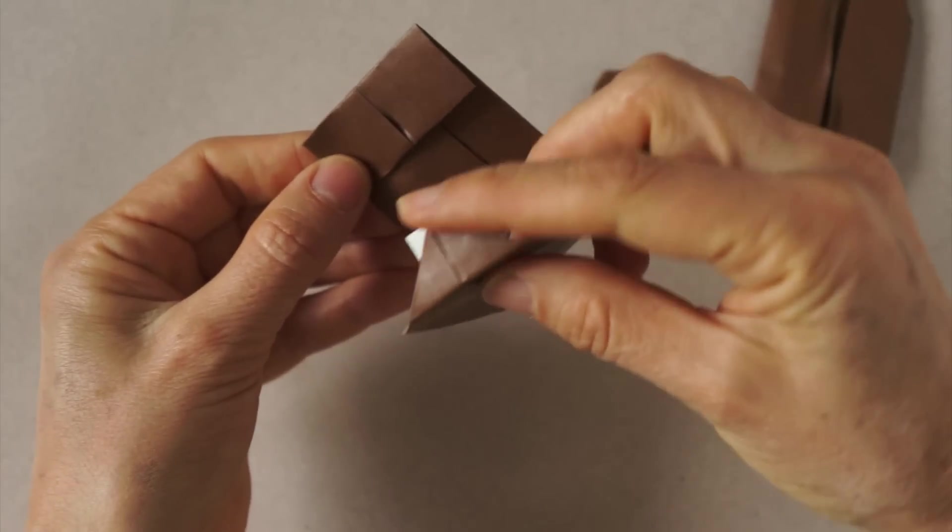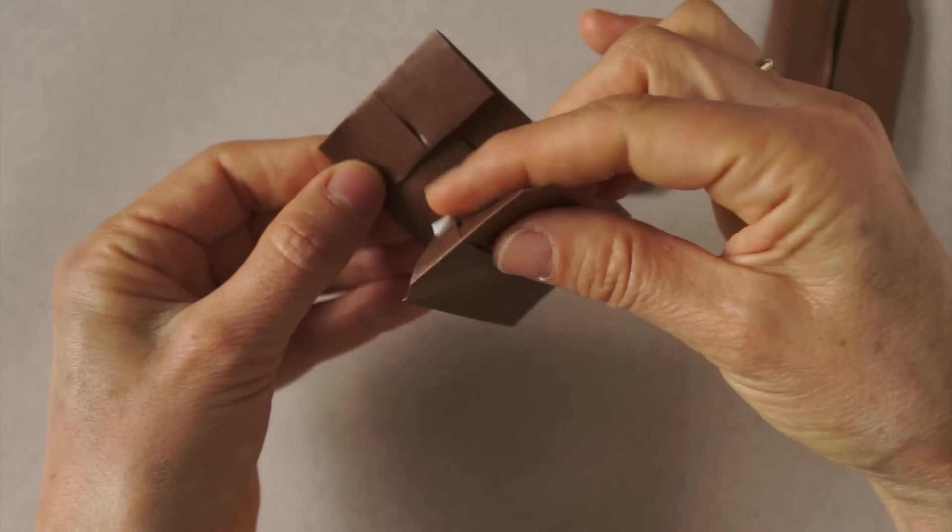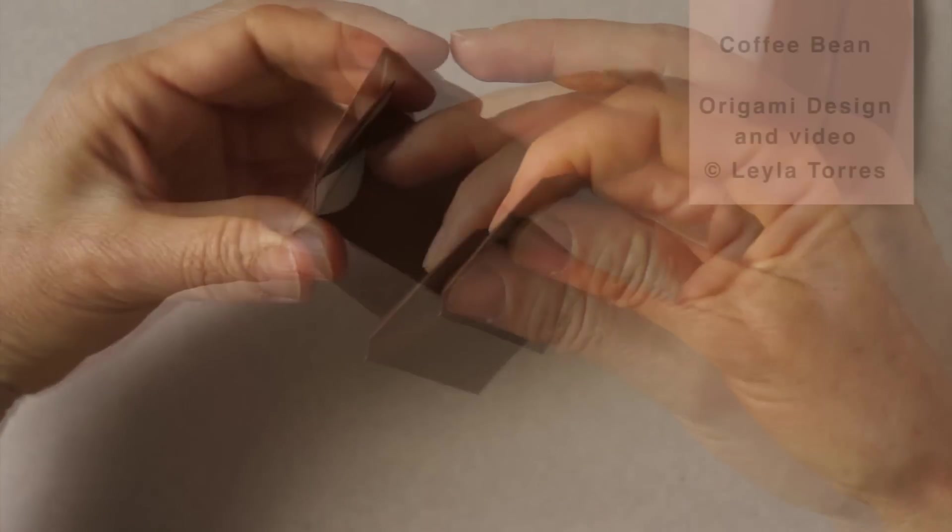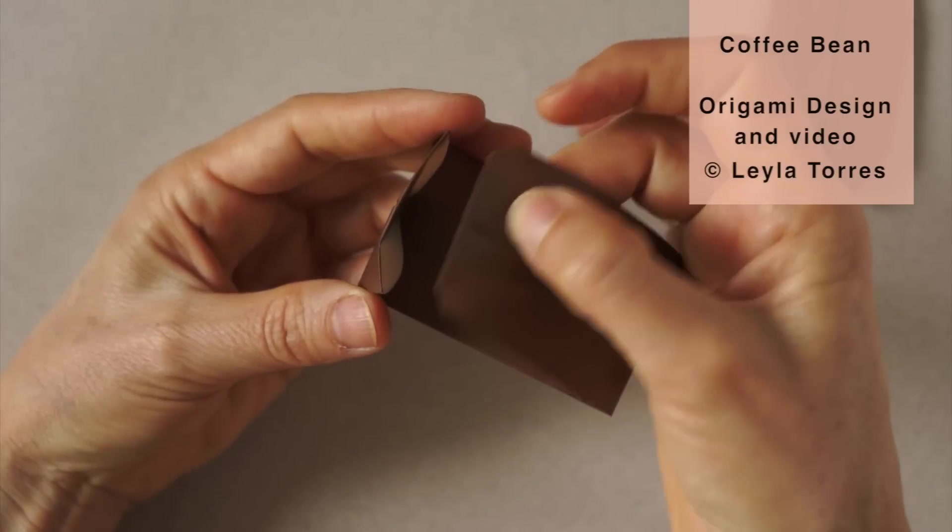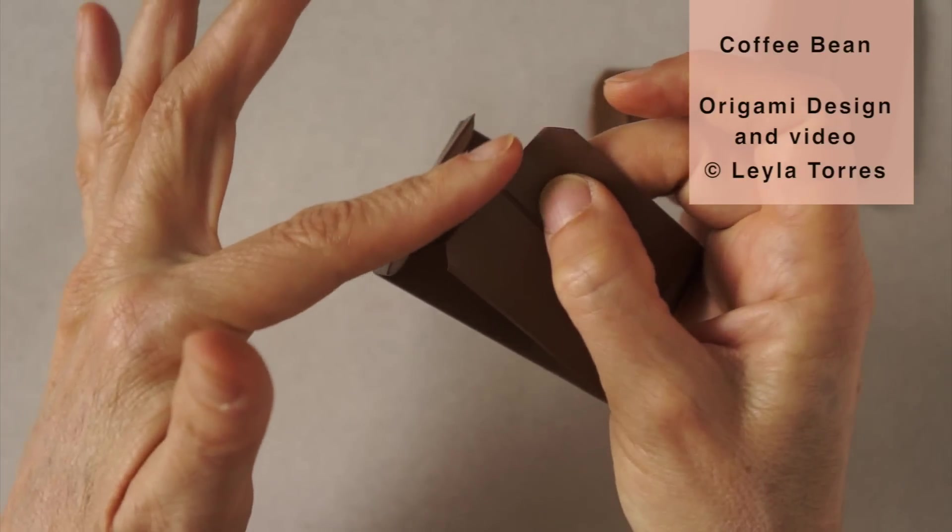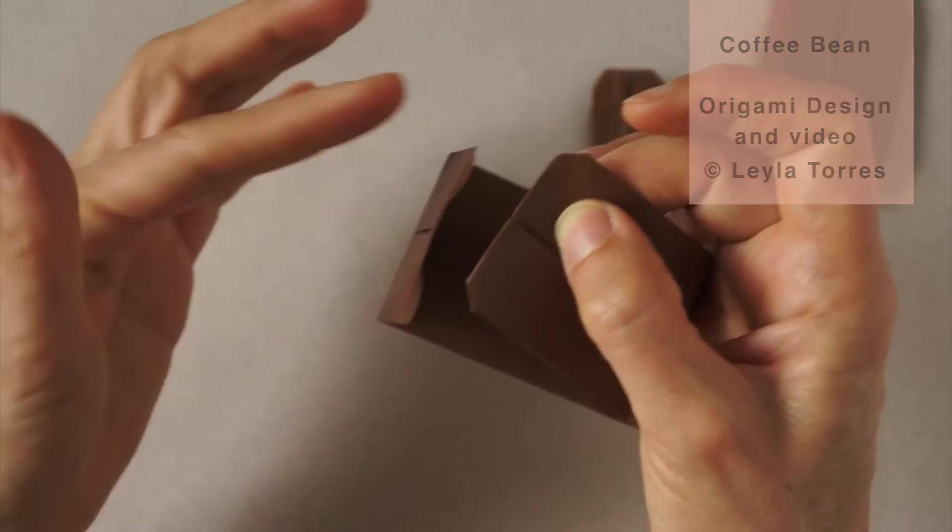We open. Make sure that this flap is folded. This is a packet. We insert this edge into the packet.